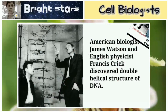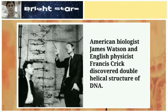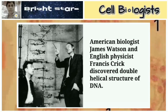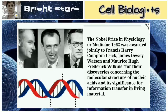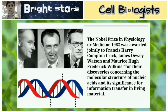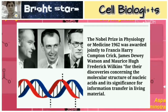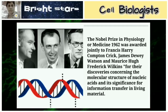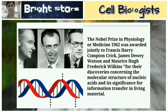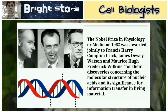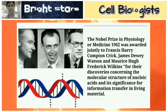The Nobel Prize in Physiology or Medicine for 1962 was awarded jointly to Francis Harry Compton Crick, James G.H. Watson, and Maurice Frederick Wilkins for the discoveries concerning the molecular structure of nucleic acids and their significance for information transfer in living material.